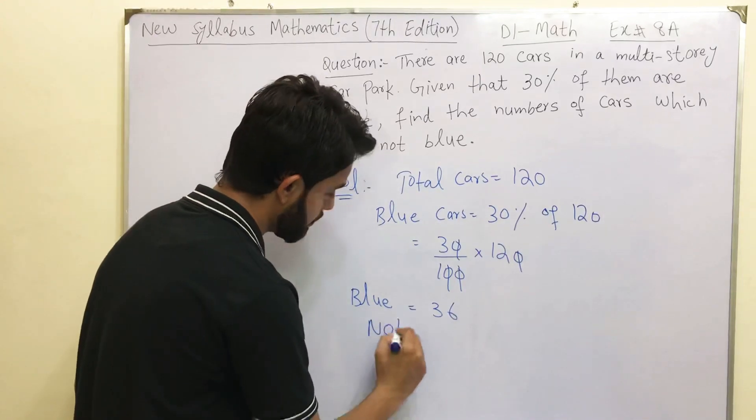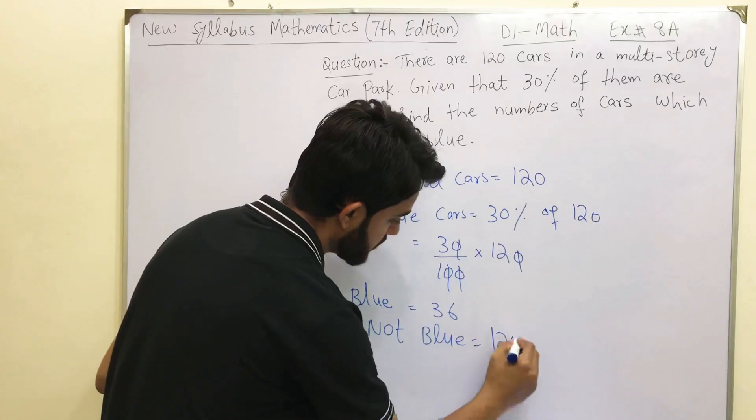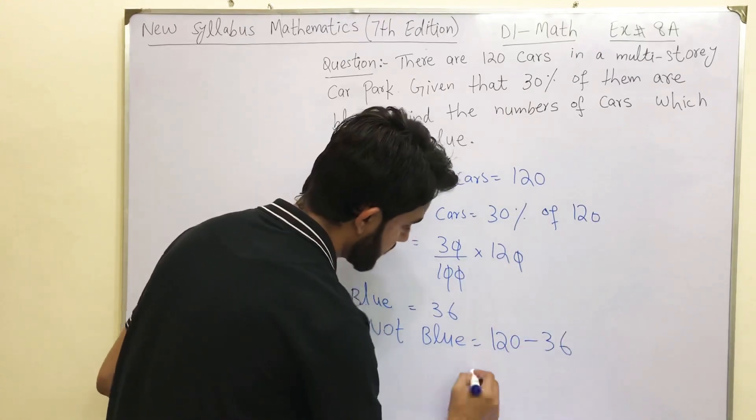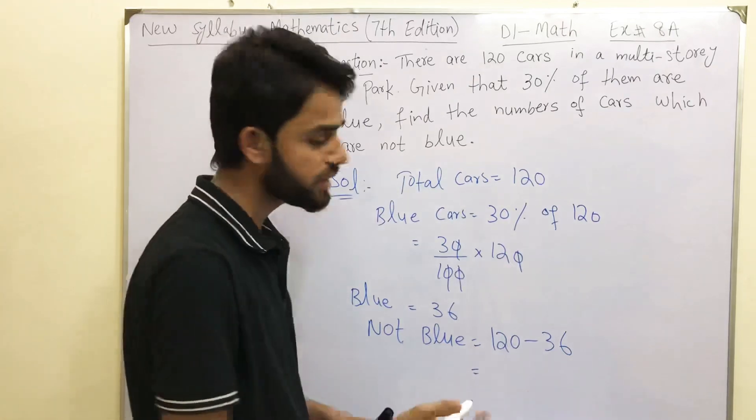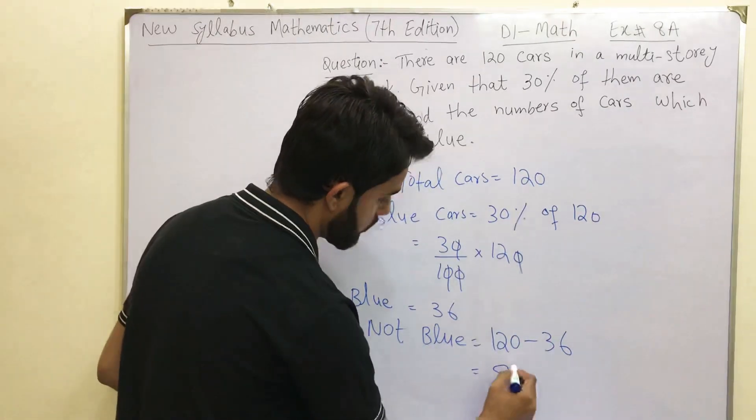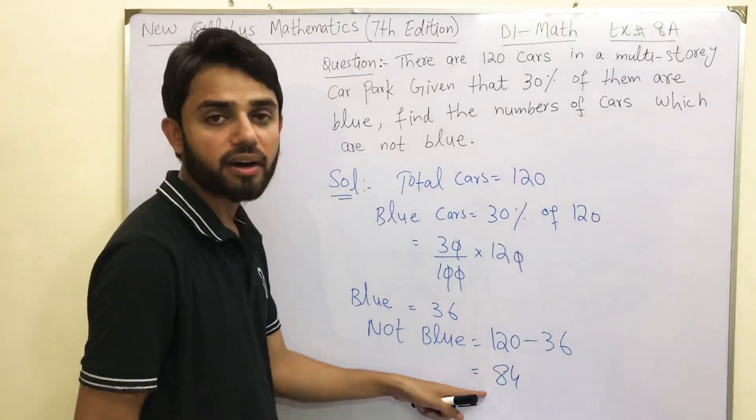Not blue: 120 minus 36. 36 rounded to 40, 120 minus 40 will give you 80 and then 4. 84. So we just got our answer that 84 cars are not blue.